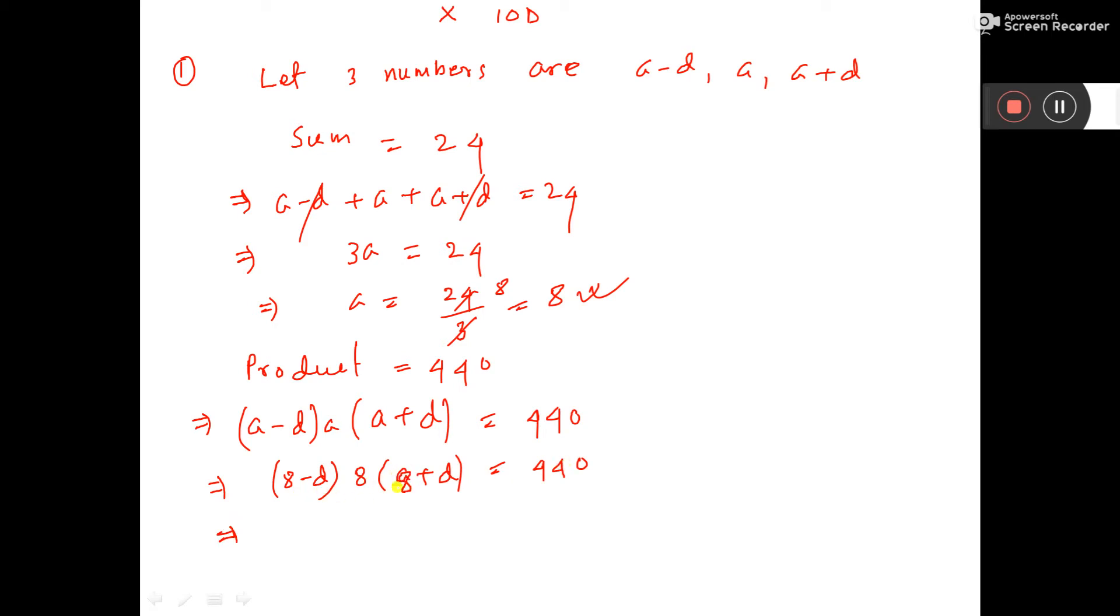Now this 8 you can move to the right hand side. So (A minus D) times (A plus D) - that is A squared minus D squared - equals 440 divided by 8.